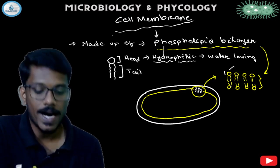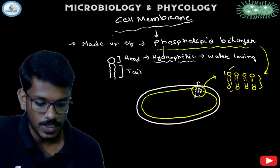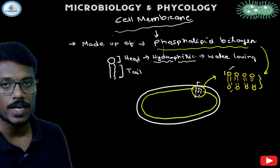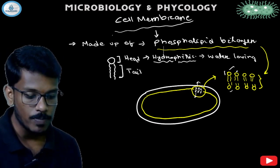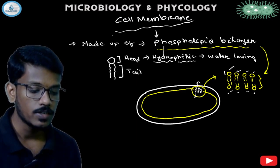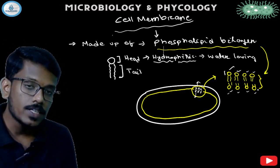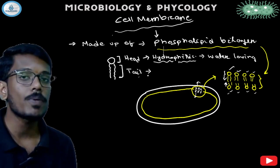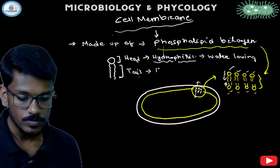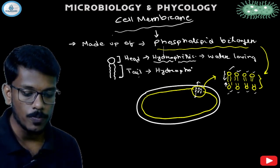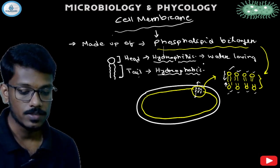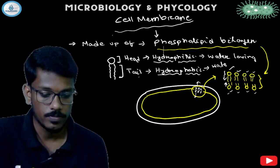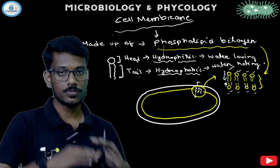On the outer side we have the hydrophilic part, and on the inner side we also have the hydrophilic part facing the cytoplasm. So both the outer side and inner side have the head part facing outward. On the inner side, the tail parts face each other. The tail part is the hydrophobic part — 'hydro' meaning water and 'phobia' meaning fear — so hydrophobic means the water-hating part, the part that does not love water and separates away from water.